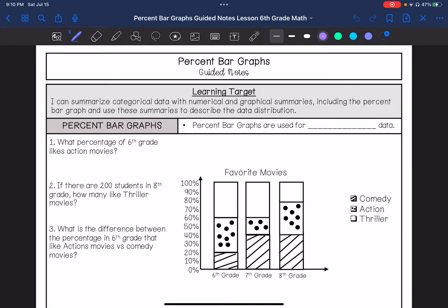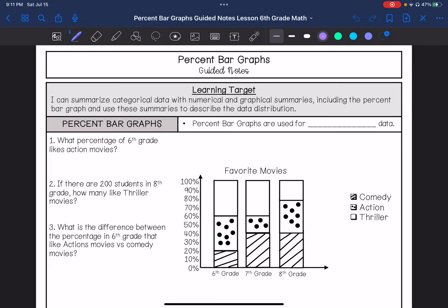We are going over percent bar graphs guided notes. My learning target is I can summarize categorical data with numerical and graphical summaries, including the percent bar graph, and use these summaries to describe the data distribution. So a percent bar graph is used to show categorical data.